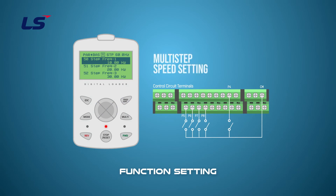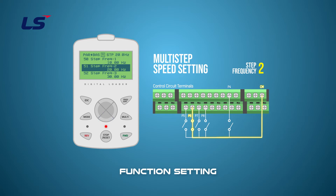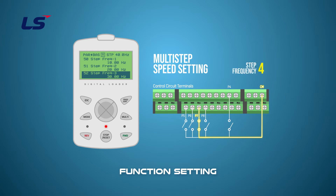Terminal P5 means step 1, and the frequency setting for step 1 is set at BAS50, step frequency 1. P6 stands for step 2, and the frequency setting for step 2 is set to BAS51, step frequency 2. If terminals P5 and P6 enter simultaneously, this means step 3, and the frequency setting for step 3 is set to BAS52, step frequency 3. Terminal P7 stands for step 4, and the frequency setting for step 4 is set to BAS53, step frequency 4. This series of combinations allows you to set the speed of each step up to BAS56, step frequency 7.